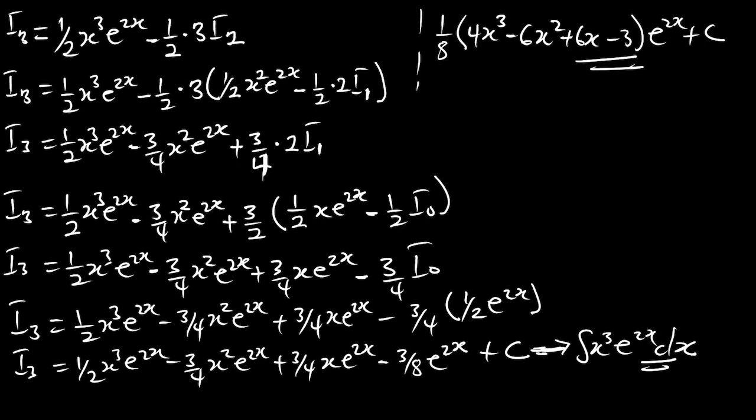You can still simplify this and get the simplified form — factoring out (1/8) to get (1/8) * (4x^3 - 6x^2 + 6x - 3) * e^(2x) + c. When you look at the answer, you see a trend: the x powers decrease from cube to square to power 1 to power 0. This is how you use the reduction formula to obtain your integral. Thank you for watching this episode. We are going to bring you other interesting episodes. Stay tuned.